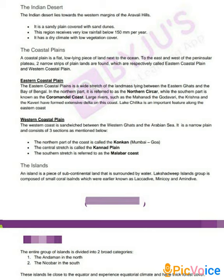Now the western coastal plain. The western coast is sandwiched between the Western Ghats and the Arabian Sea. It is a narrow plain and consists of three sections. The northern part of the coast is called the Konkan coast, from Mumbai to Goa. We also have the Konkan Railway, which is attached with this area.